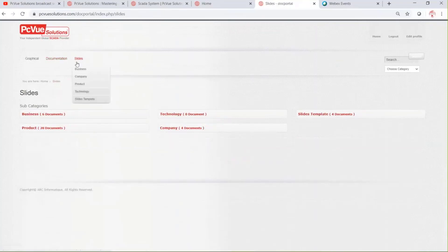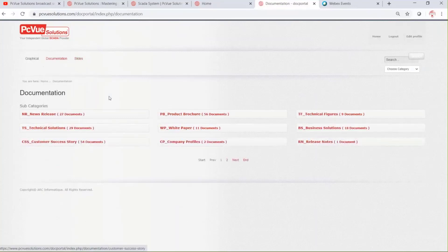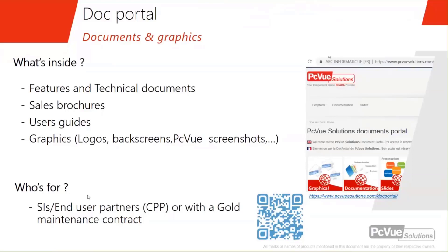You also have a collection of slides available on several topics. There's a lot of documents in this portal to help resellers and end users. It's available for partners with a CPP certified partner program, or for users with a gold maintenance contract. You register and then access the doc portal with your credentials.